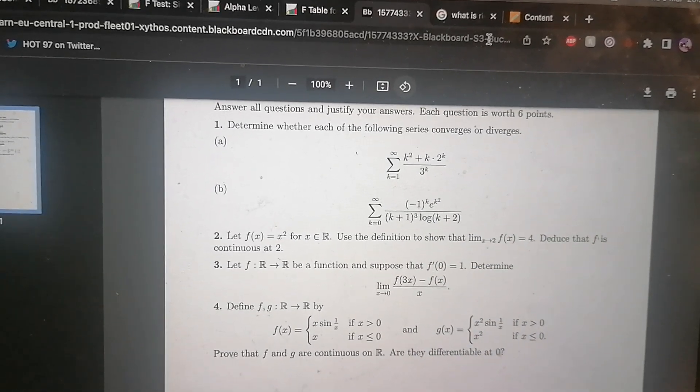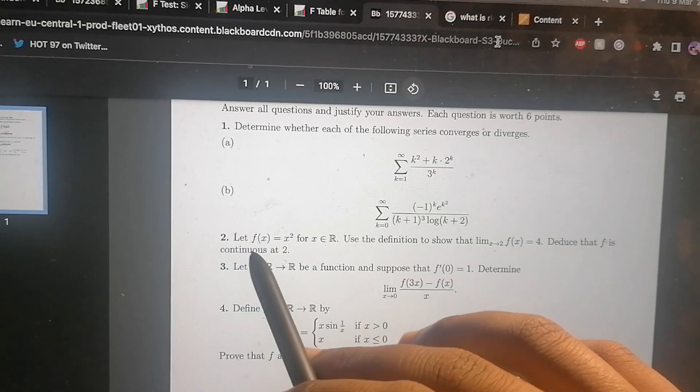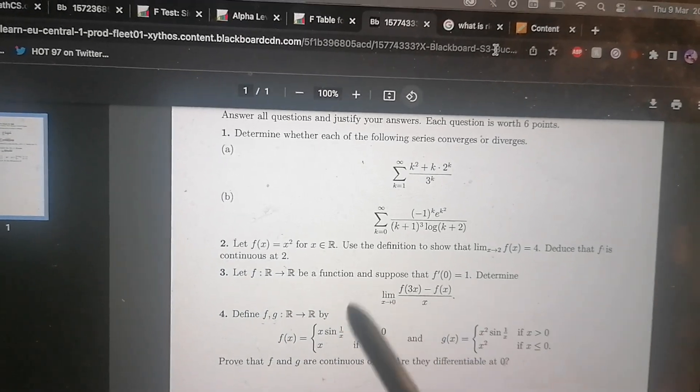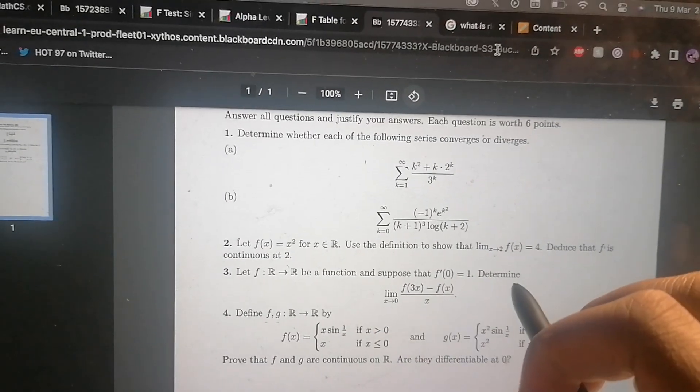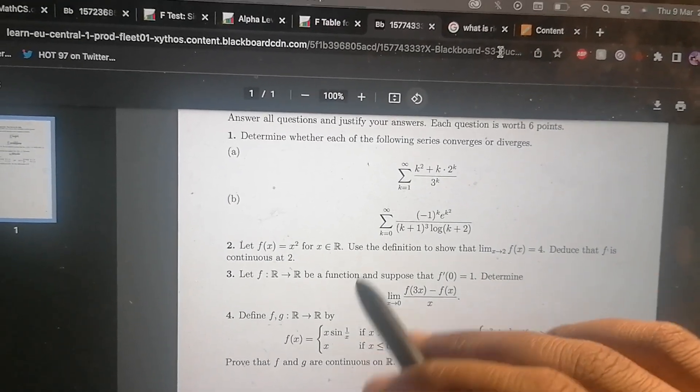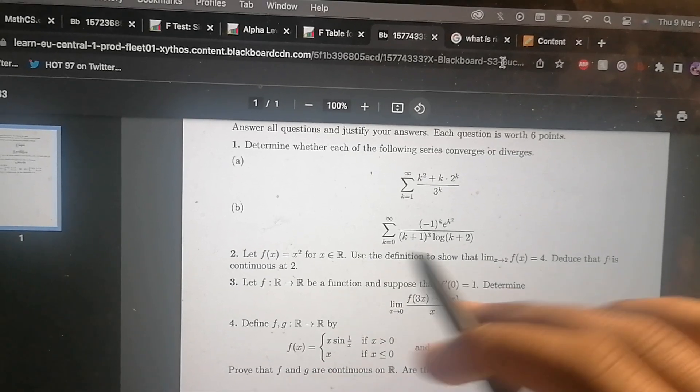This one here, I'm honestly not sure how I'm going to approach that one. I have a couple ideas but nothing too much. Number two I'm very confident with - using the epsilon-delta definition to show that the limit of x squared is four as x tends to two, then showing that f is continuous at two. Not too bad.